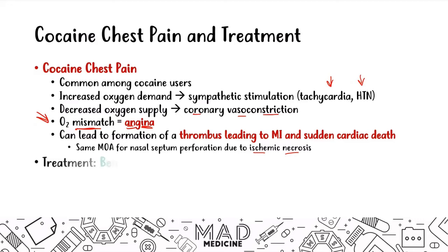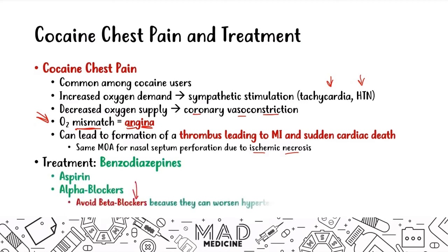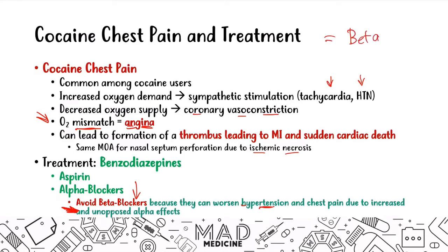Treatment for cocaine chest pain includes benzodiazepines, aspirin, and alpha blockers. Importantly, you want to avoid beta blockers — this is very important. Beta blockers can worsen the hypertension and chest pain because of increased unopposed alpha effects. So: give alpha blockers, no beta blockers for cocaine chest pain.